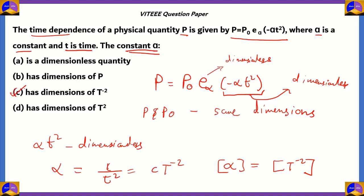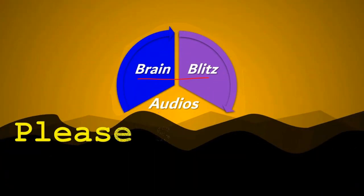Among the four options, option c is correct: the constant alpha has dimensions of T⁻². The reason is that since αt² must be dimensionless and t² already has dimensions of T², alpha must carry T⁻² to cancel it. This is required because p and p₀ share the same dimensions, so the equation must be dimensionally consistent.